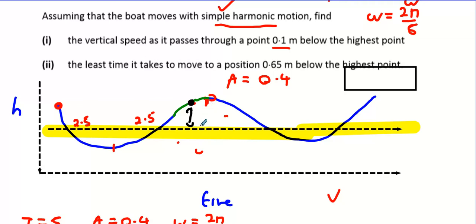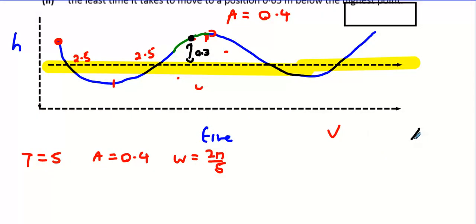So your x value is 0.3, which is around here. If you're 0.1 away from the top, you're 0.3 away from equilibrium. So x equals a positive 0.3 and we're looking for v. We can use v² equals ω²(a² - x²).